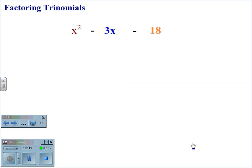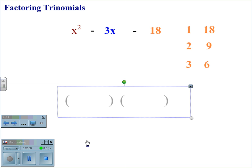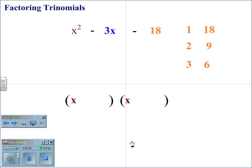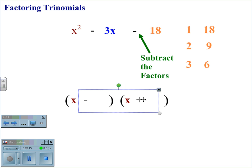When you get a trinomial with signs like x squared minus 3x minus 18, we again begin with factoring the c term. 1 and 18, 2 and 9, and 3 and 6 are the factors of 18. We begin with the parenthesis as before, and x squared factors out to x times x. In this case, the second sign is negative, which means we are subtracting the factors. When we subtract the factors, the signs will be different. Therefore, we are going to put a negative and a positive in the parenthesis.